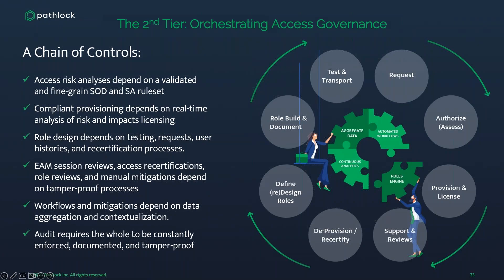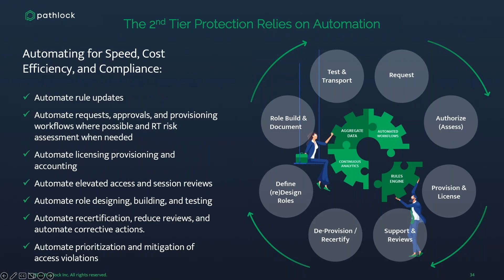This is a living, breathing life cycle that continues over and over — that's why access governance is so important. Digging into automation within access governance: you automate for speed, cost, efficiency, and compliance. Automate your rules updates, requests, approvals, and provisioning. If you can offload 80% of automation around provisioning and deprovisioning, it makes you that much more secure and compliant, letting you focus on the other 20%. Automate elevated access and session reviews, recertification, corrective actions — whether putting in a mitigation or removing authorizations from a role to make it cleaner over time.